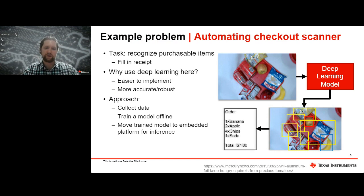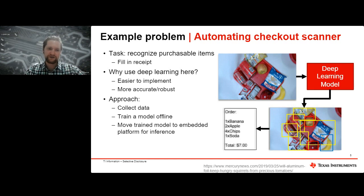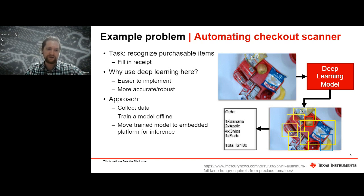As an example problem, I'm going to be talking about automating a checkout scanner. We're all familiar with self-service checkout kiosks in grocery stores where you scan each barcode individually. We can take that further by having a camera look down, recognize everything in a single shot, and fill in the receipt. Using deep learning for this is easier to implement than a custom algorithm and probably more accurate, assuming you have the right data. To solve this, we need to collect data — take pictures of these scenes, train a model offline, and then move that trained model onto an embedded platform to run inference locally.